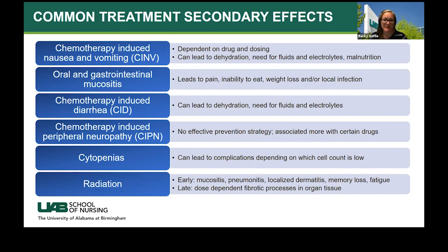Chemotherapy-induced nausea and vomiting is usually dependent on the type and dosing of chemotherapy. Preventative treatment with prophylactic medications should be included in regimens with high or intermediate emetic risk. For multi-day regimens, anti-emetics should be included daily, considering the pharmacokinetics of the drugs used. Combination anti-emetic regimens are often the best choice for prophylactic treatment, particularly with IV chemotherapy. If the patient experiences breakthrough nausea and vomiting, a drug from a different class should be used. Non-pharmacologic options include small frequent meals, avoiding greasy and spicy foods, caffeine, and strong odors, and staying well hydrated.